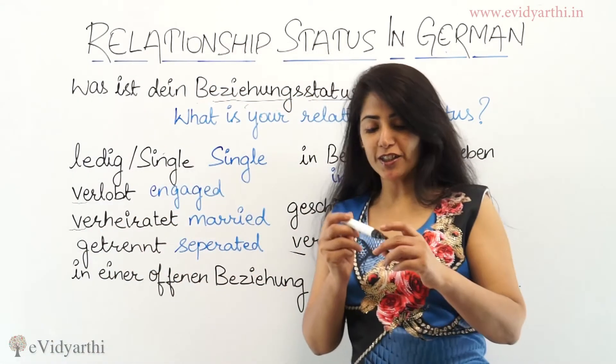If you are married then it's Verheiratet. Again 'Be' is pronounced as 'Ver', so Verheiratet. If separated then Getrennt.